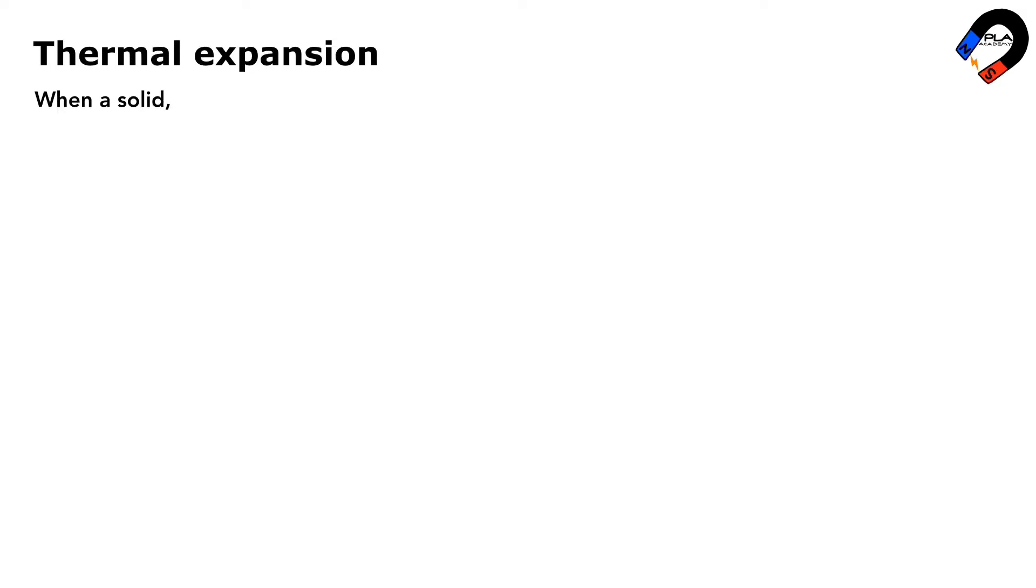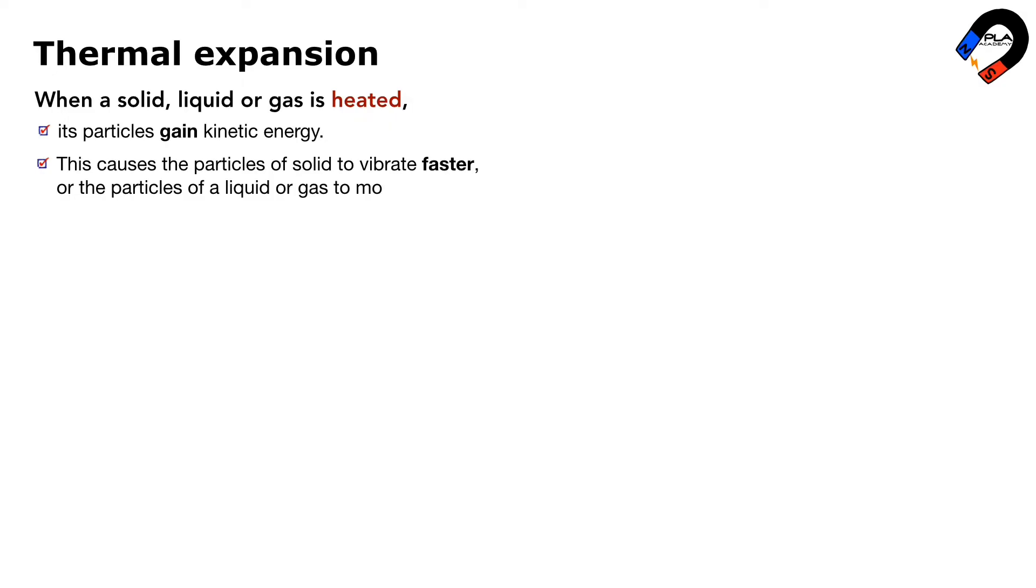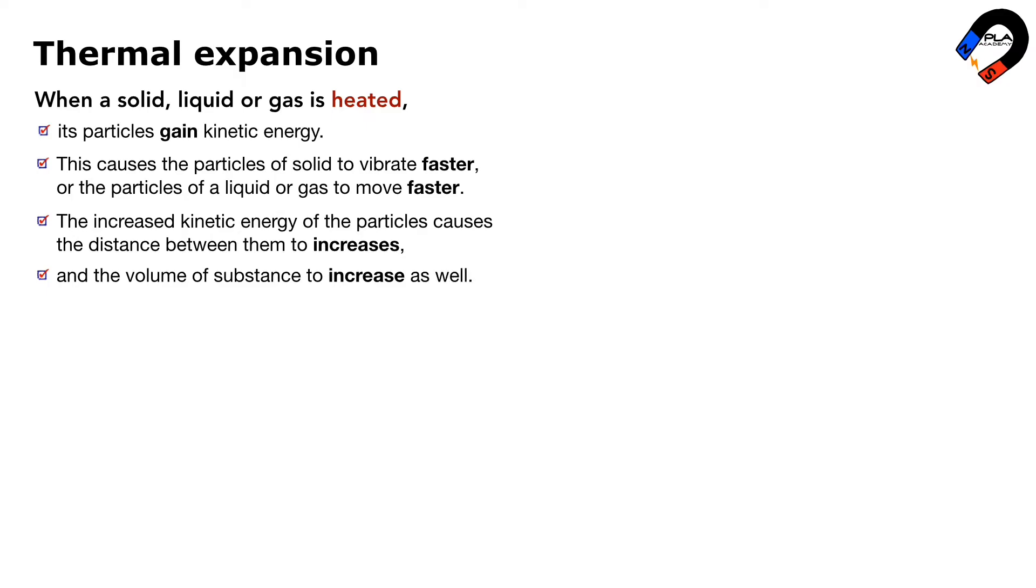When a solid, liquid or gas is heated, its particles gain kinetic energy. This causes the particles of solid to vibrate faster, or the particles of a liquid or gas to move faster. The increased kinetic energy of the particles causes the distance between them to increase, and the volume of substance to increase as well. This is called expansion.